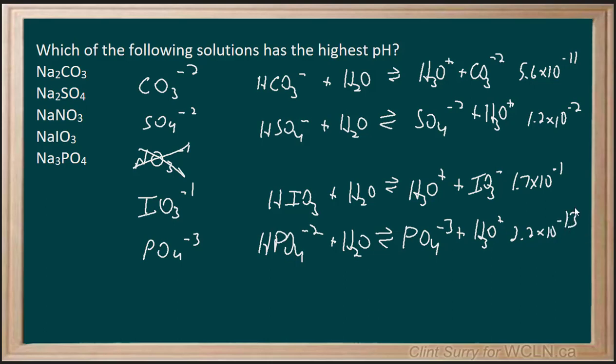So out of all these, the Ka that's the smallest is this last one, which means the Kb for this one will be the largest, making this the most basic and the one with the highest pH. So our answer would be sodium phosphate.